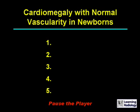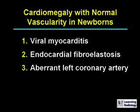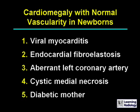The differential is cardiomegaly with normal vascularity in newborns. There are five major causes. The five major causes include viral myocarditis, endocardial fibroelastosis, aberrant left coronary artery, cystic medial necrosis, and infant of a diabetic mother.